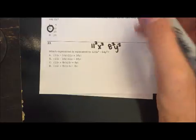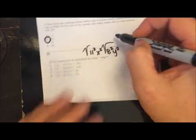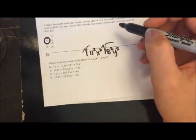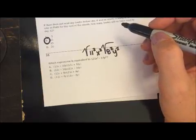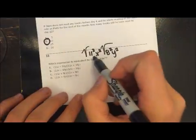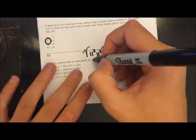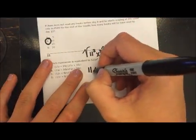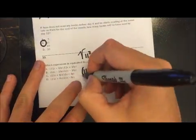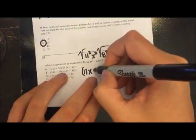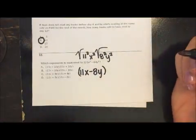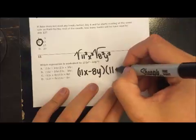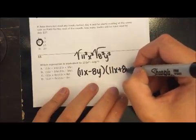So to do the difference of two squares, we have to take the square root of each of those. Okay, so let's look at the square root of each of these portions. Well, the square root of 121 is 11 and the square root of x squared is x. And then the square root of 64 is 8 and the square root of y squared is y. And then when we have difference of two squares, we have one that actually has addition as well.